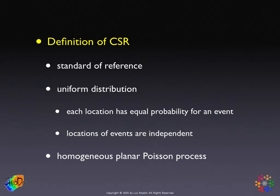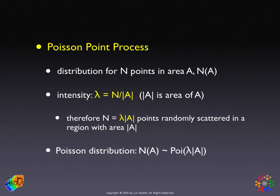These requirements are formalized in what is referred to as a homogeneous planar Poisson process. Planar means it's points in a plane, and Poisson is the particular distribution that drives this. A Poisson point process describes a distribution of points in an area following the classic distribution for counts of events. An important characteristic of our point pattern is the intensity, which is the number of points divided by the area. You can also flip this around and say that the number of points in a given area equals the intensity multiplied by that area.